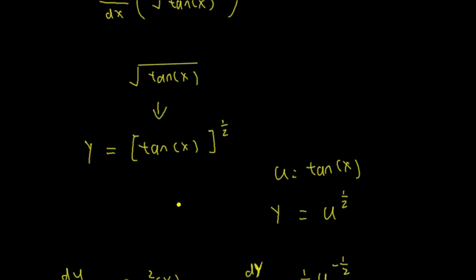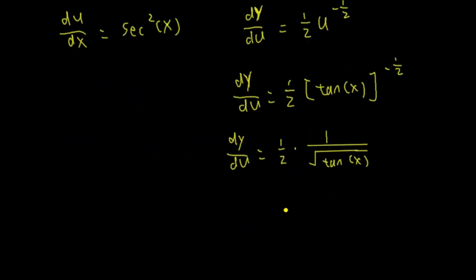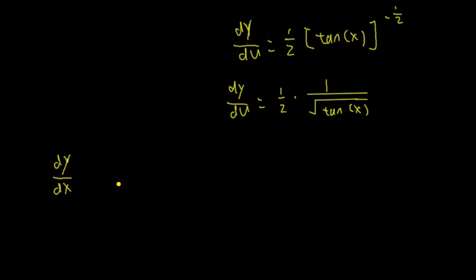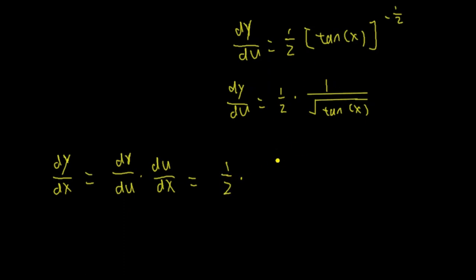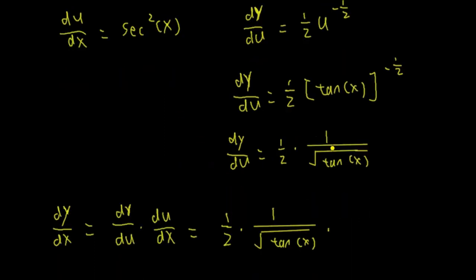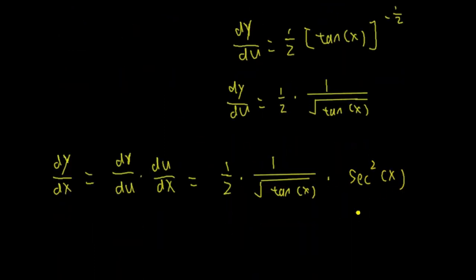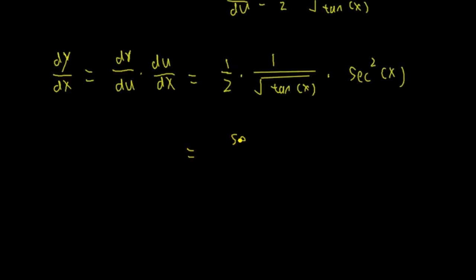How do we differentiate this? We are looking for dy/dx. According to the chain rule, dy/dx equals dy/du times du/dx. Du and du cancel out, leaving dy/dx. So dy/du is 1 half times 1 over square root of tangent x, times du/dx which is secant squared x. Grouping this together: secant squared x on top, divided by 2 times square root of tangent x.